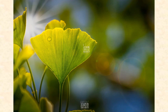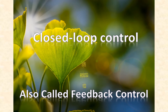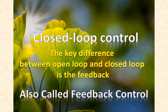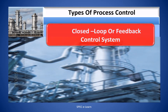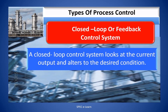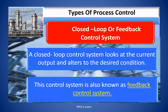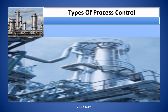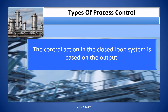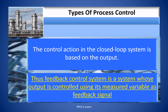Closed loop control. The key difference between the open loop and closed loop control system is the feedback. A closed loop control system looks at the current output and alters it to the desired condition. This control system is also known as a feedback control system. The control action in the closed loop system is based on the output. Thus, a feedback control system is a system whose output is controlled using its measured variable as a feedback signal.